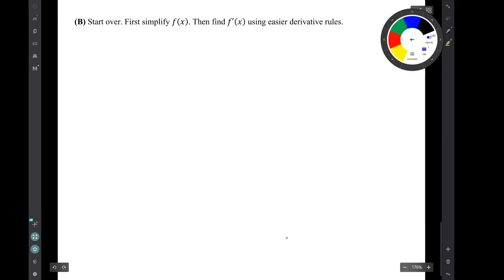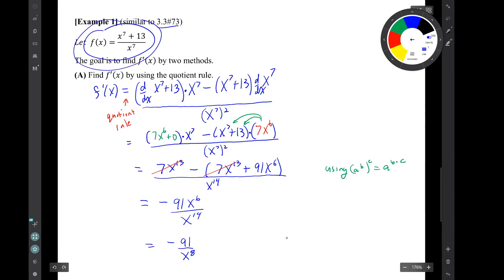Part B. Start over. Simplify f(x). Then find f' using easier derivative rules. Well, let's go up and have a look at f again. f(x) is this thing: x^7 plus 13 all over x^7.